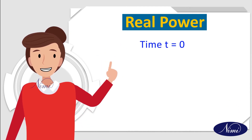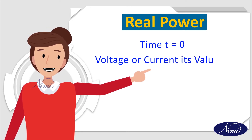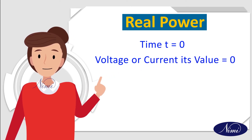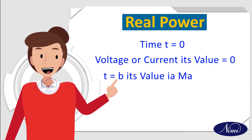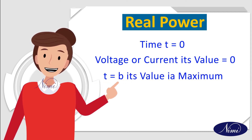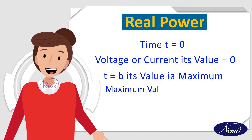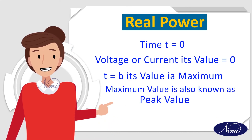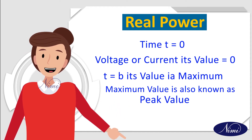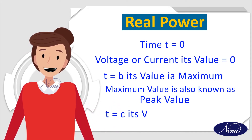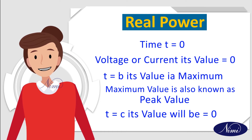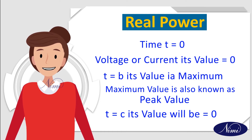its value — whether voltage or current — is 0. At time T equals B, its value is maximum; that is, it reaches its peak value. At time T equals C, it will be 0 again, and then it increases negatively, and so on.